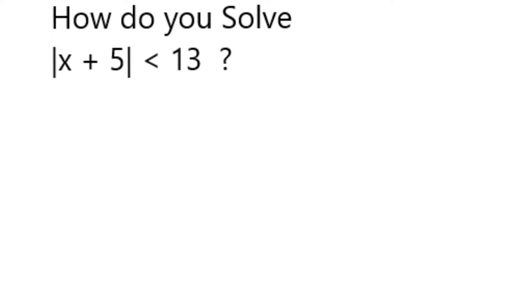If the absolute value of something, in this case x plus 5, is less than 13, that means it has to be itself less than 13, and also it has to be bigger than negative 13.